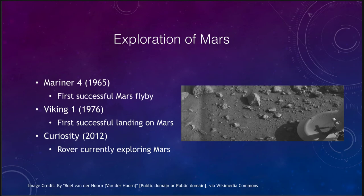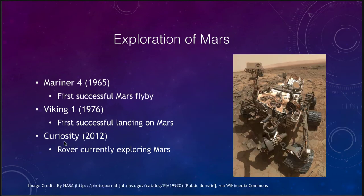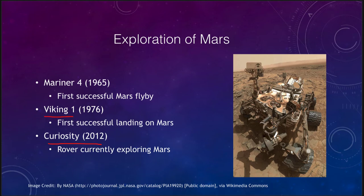More recently we have the Curiosity rover, which has been on Mars since 2012 and is currently exploring Mars today. Here we can see an image taken by the rover itself — actually a number of different images stitched together — showing the rover on Mars. It explores the surface within the crater it was landed in. The rovers are better than something like the Viking craft, which landed but could not move. The Curiosity rover can move around and travel to explore different areas, so if something interesting is just out of reach, it can be directed there.